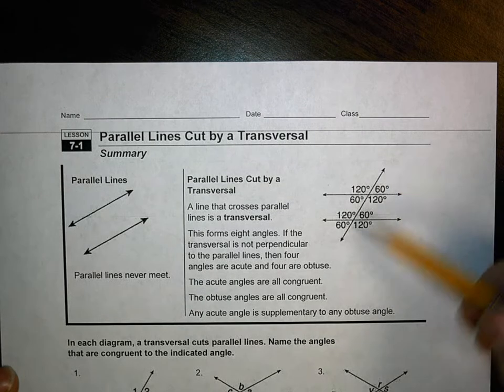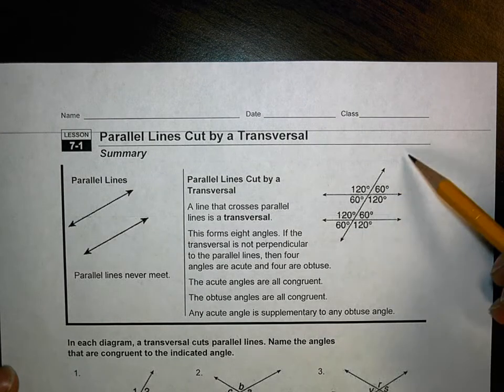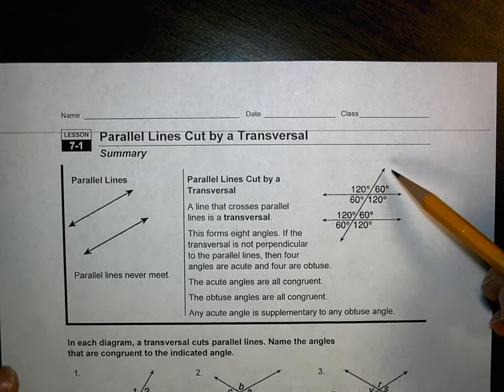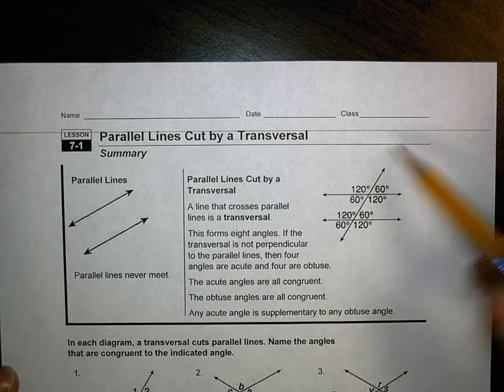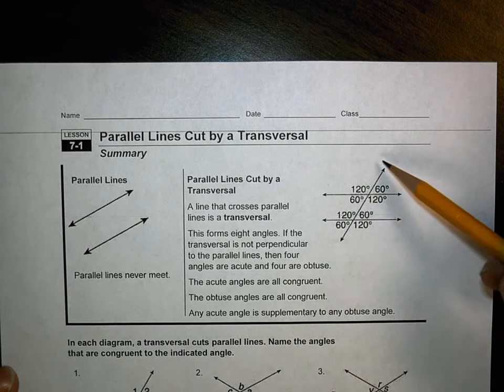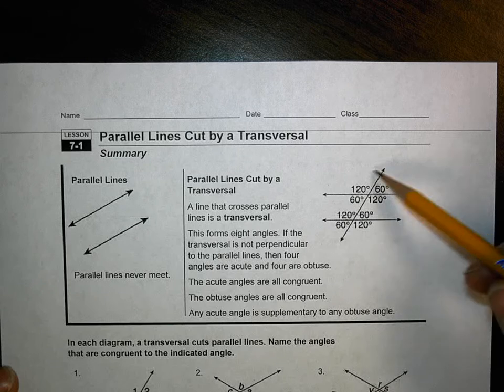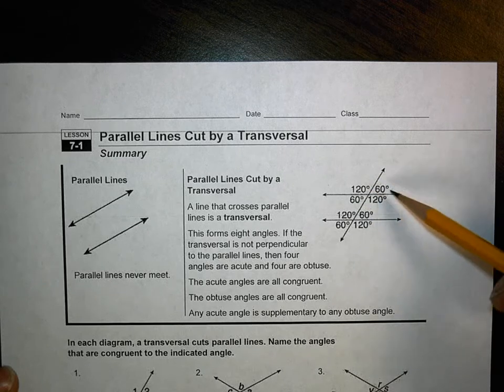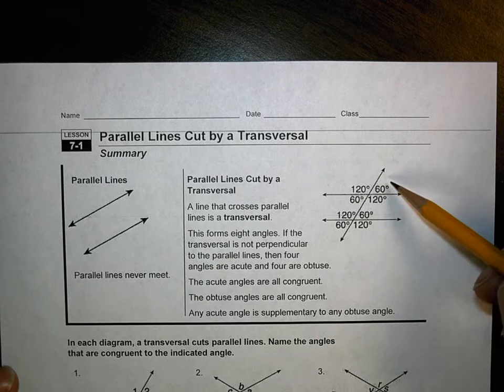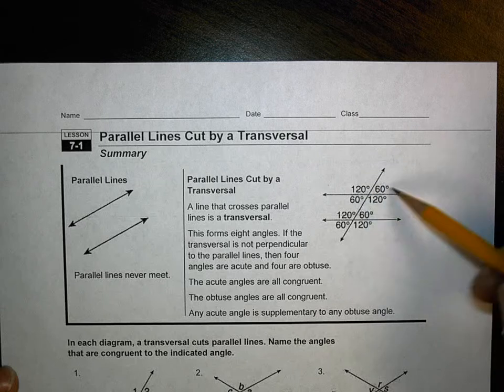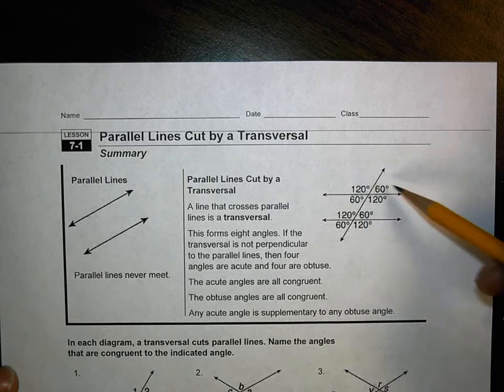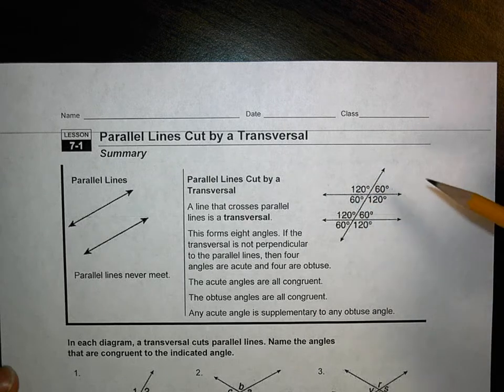A transversal is a line that cuts two other lines. Now, this unit is all about transversals that cut parallel lines. Remember, a lot of these rules don't apply if they're not parallel. You can still get the supplementary angles and the opposite angles equaling each other, but outside of that, you won't get anything else.